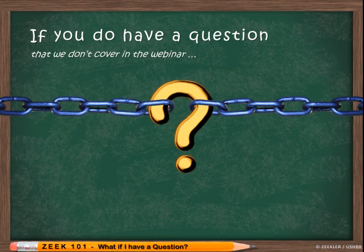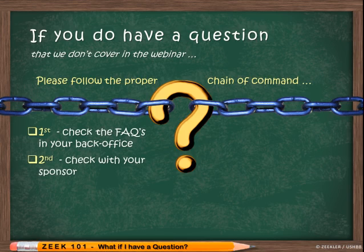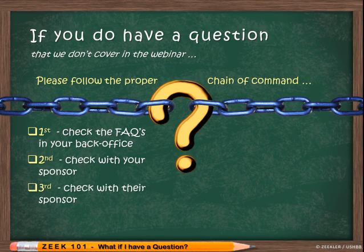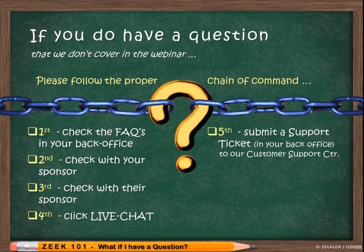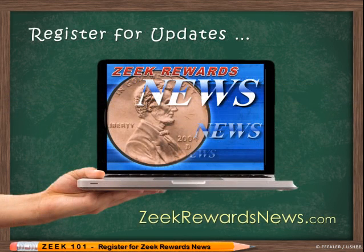If you have a question not covered in the webinar, please follow the proper chain of command: first check the FAQs in your back office; second, check with your sponsor; third, check with your sponsor's sponsor especially if you're both new to Zeek; fourth, click on the live chat on the bottom right corner of the main Zeek Rewards page; and fifth, as a last resort, submit a support ticket in your back office. Please only submit one ticket and allow the support team enough time to respond. Also register for Zeek updates at ZeekRewardsNews.com to get the latest news and information.